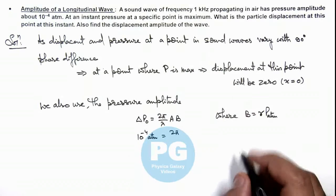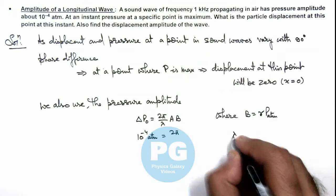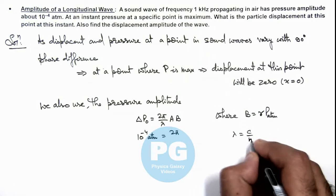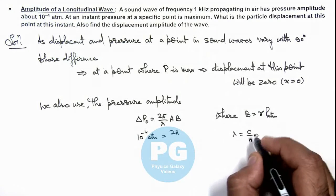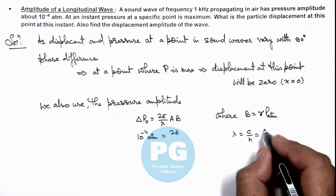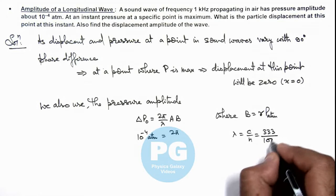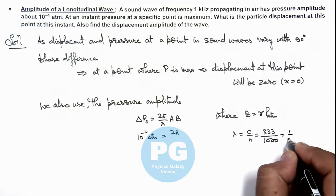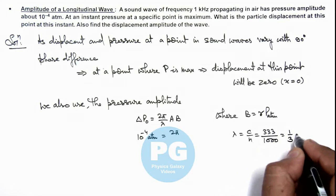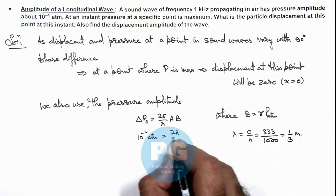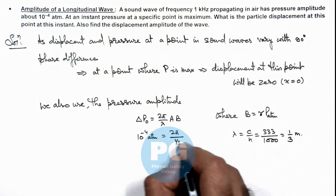So we can write the value of wavelength c/ν, and for a sound wave, if sound velocity is taken as 333 divided by frequency 1000, so λ we can write as approximately 1/3 meter. 1/3 meter, so we can substitute λ as 1/3 meter.